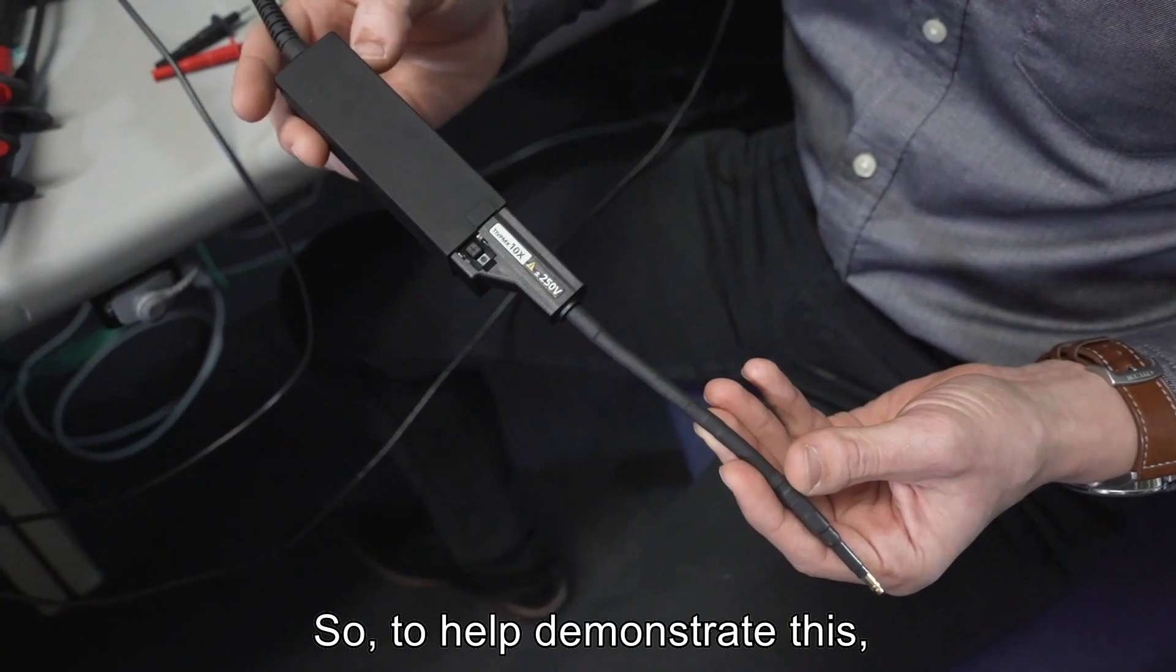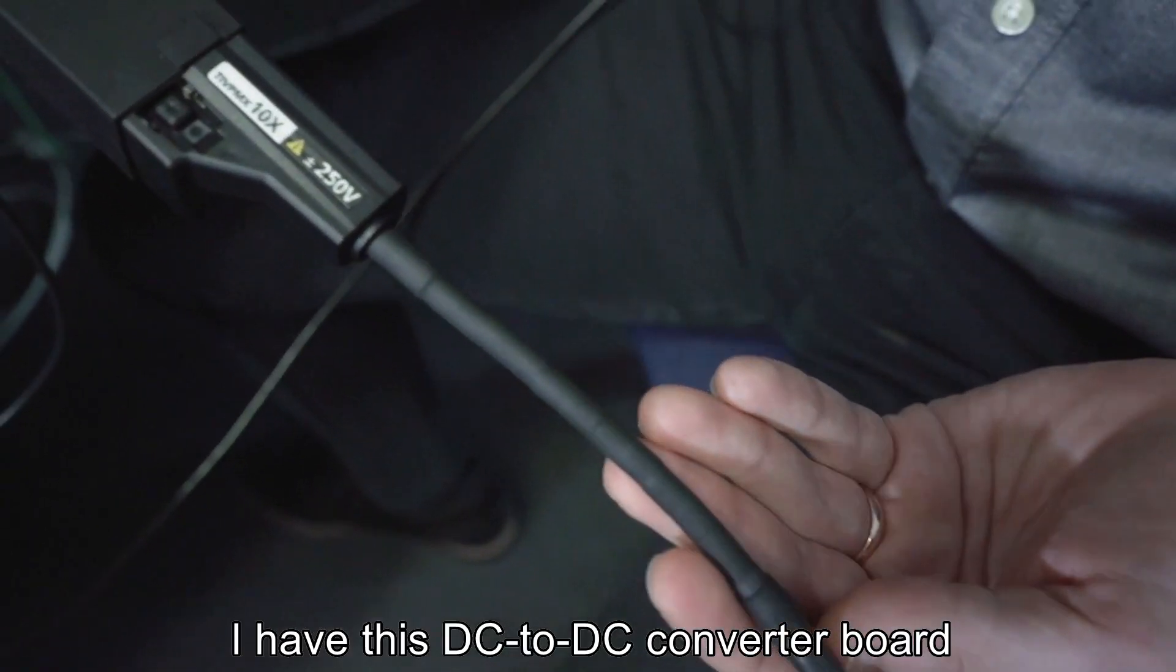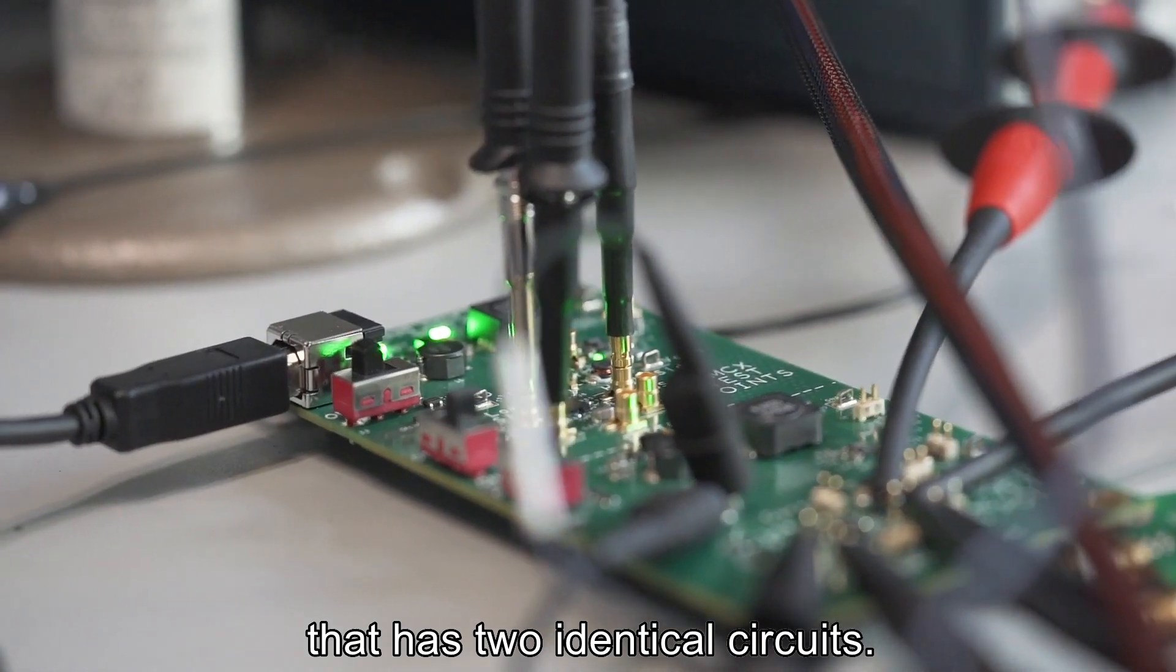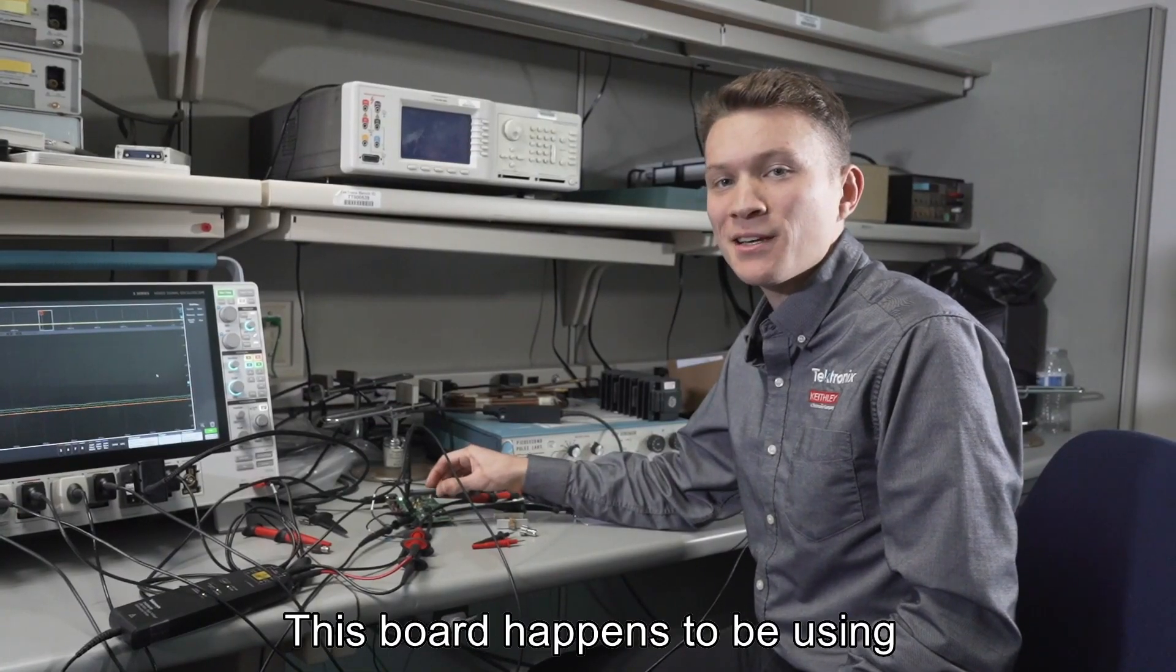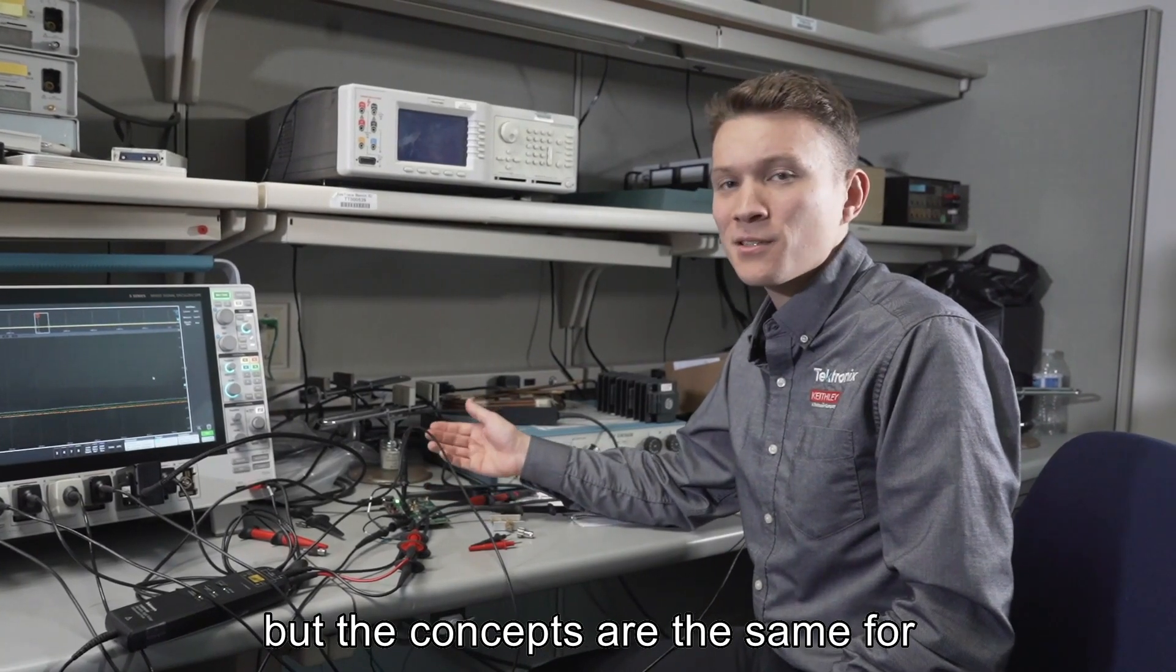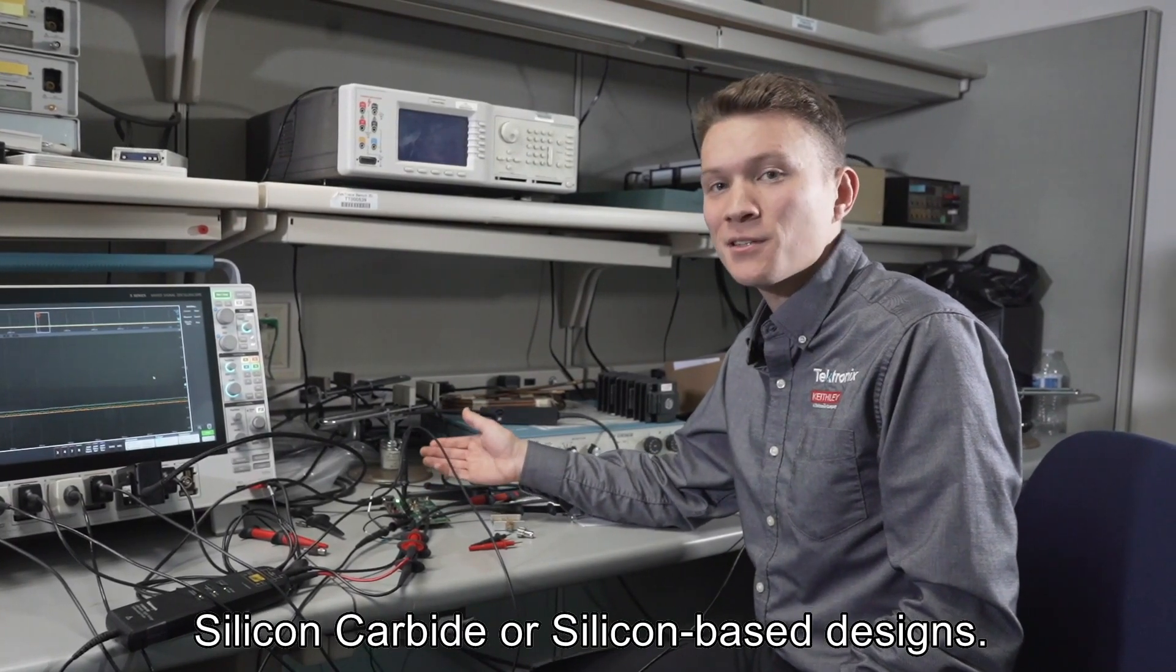To help demonstrate this, I have this DC-DC converter board that has two identical circuits. This board happens to be using gallium nitride power FETs from EPC, but the concepts are the same for silicon carbide or silicon-based designs.